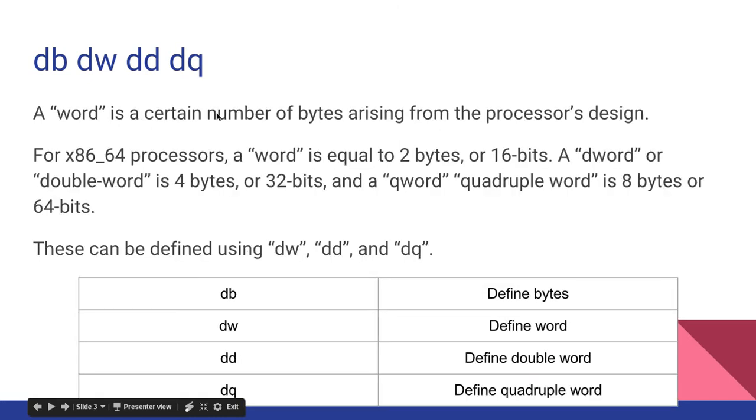So a word is a certain number of bytes arising from the processor's design. For x86_64 processors, a word is equal to 2 bytes or 16 bits. A DWORD or DOUBLE word is equal to 4 bytes or 32 bits. And a QWORD or QUADRUPLE word is 8 bytes or 64 bits.